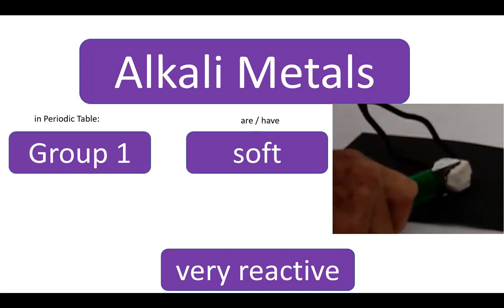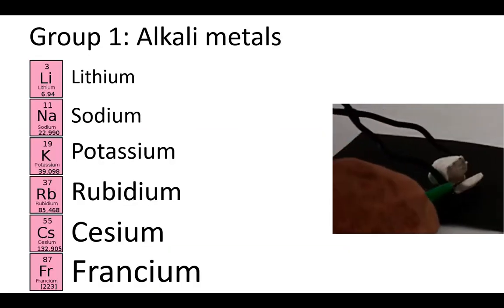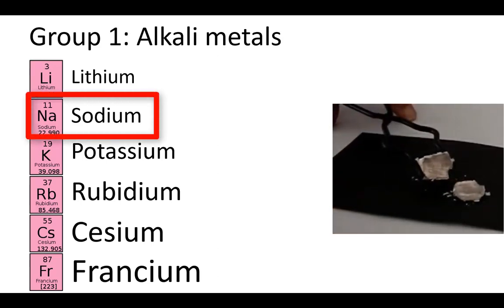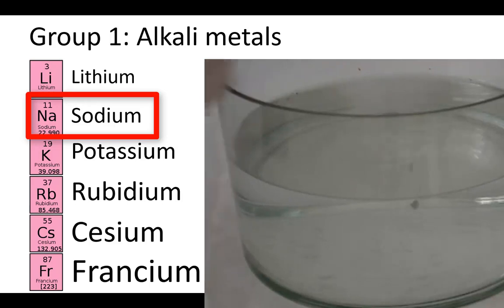They're very reactive, and the further down on the group that you go, the more reactive they are. So here you can see sodium. If you put sodium in water, it floats on the water. All alkali metals have a very low density. That's why it floats on the water, and it reacts very violently.